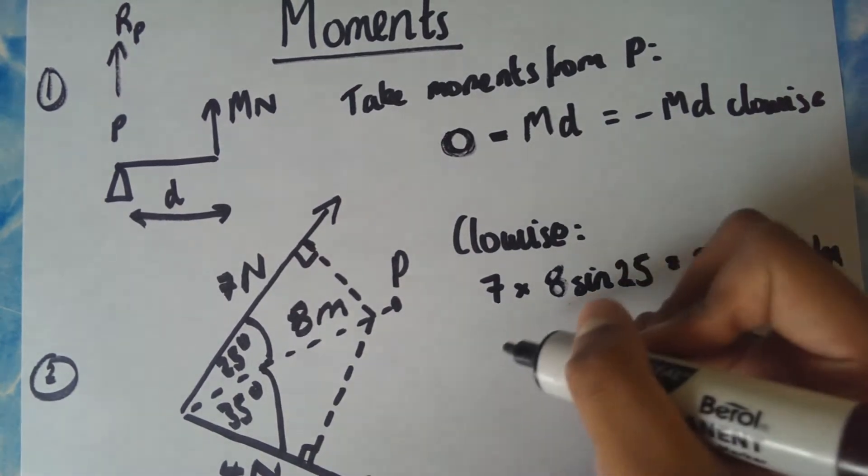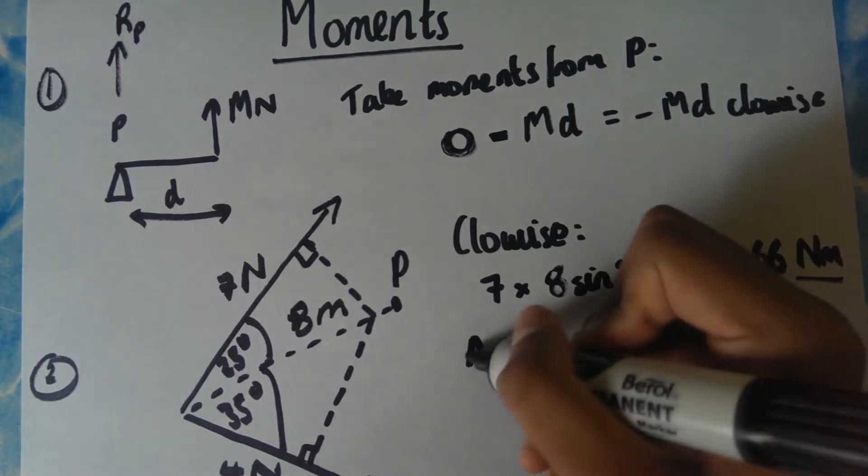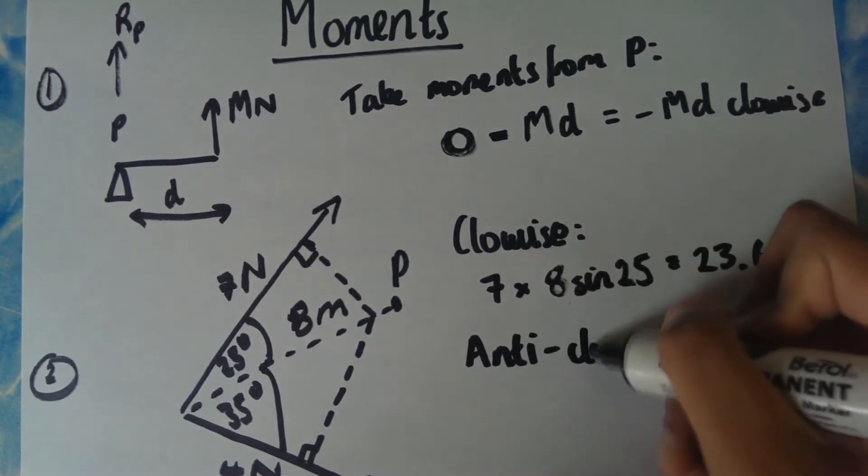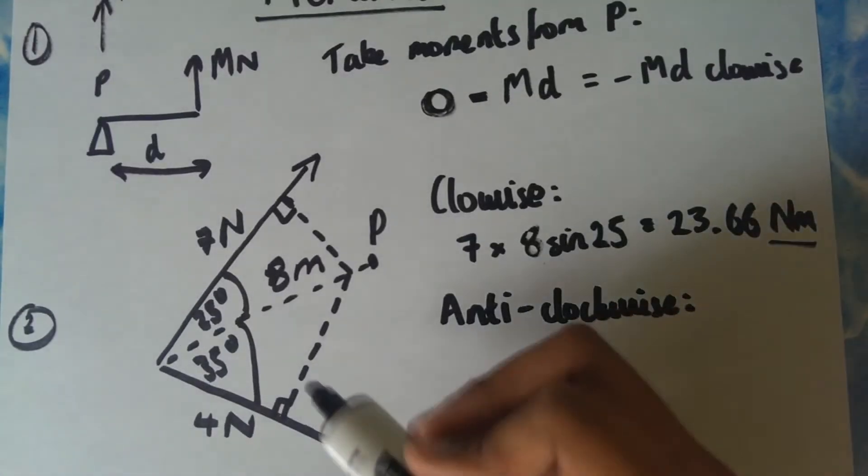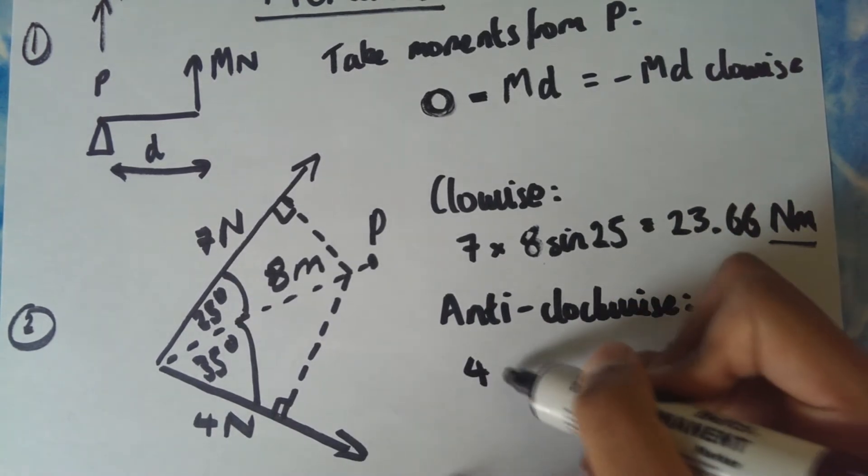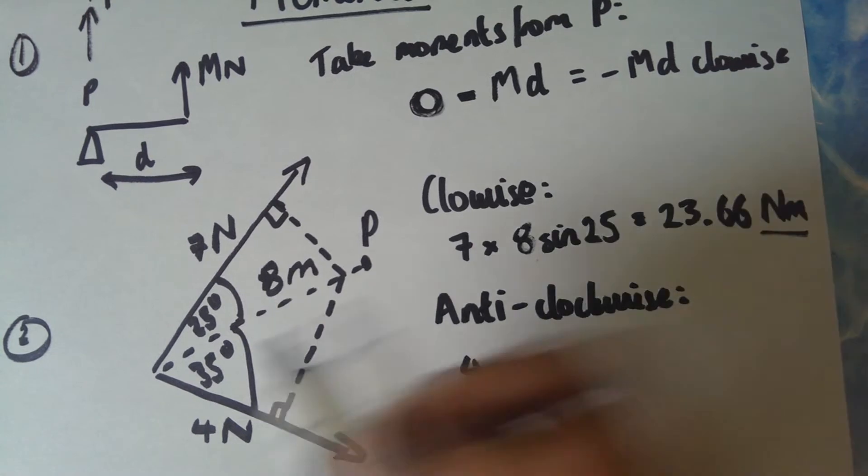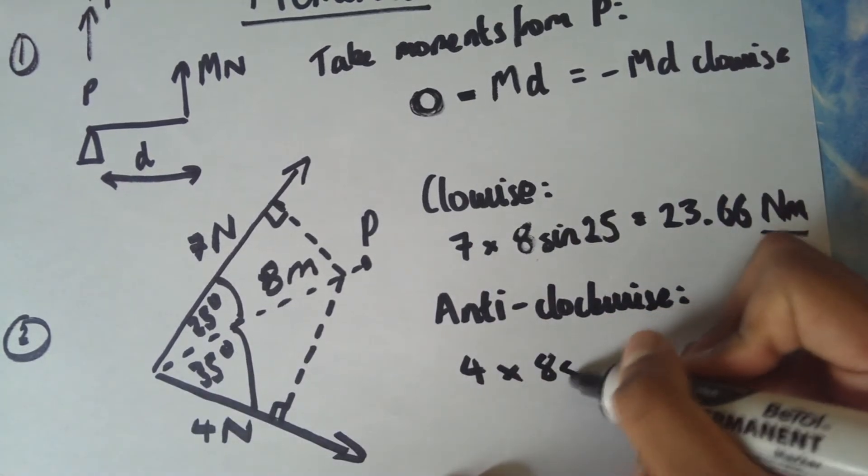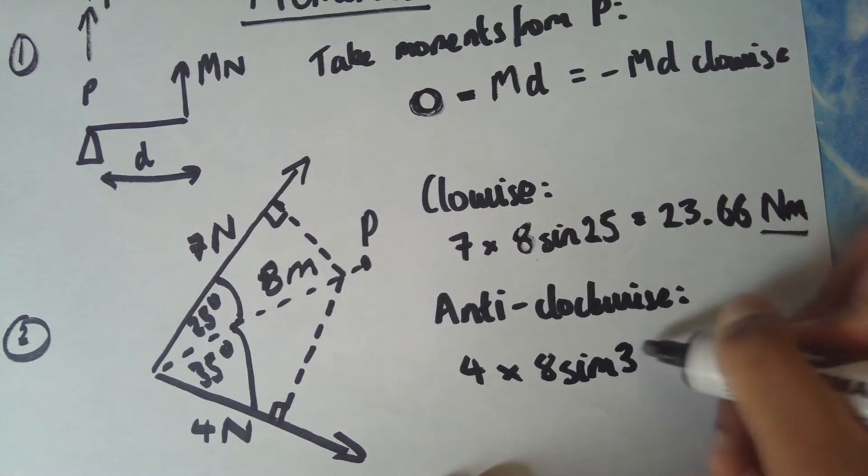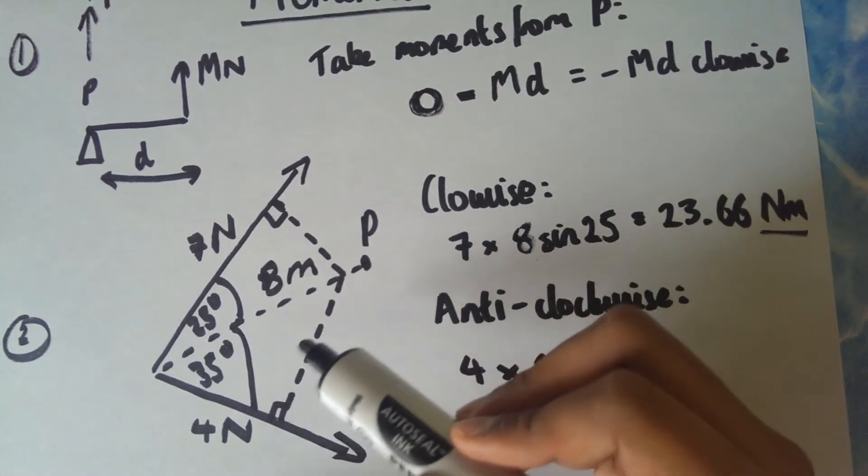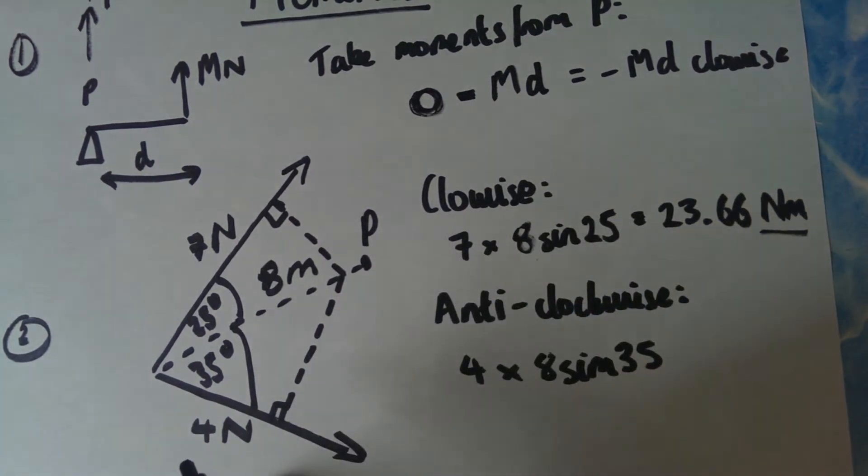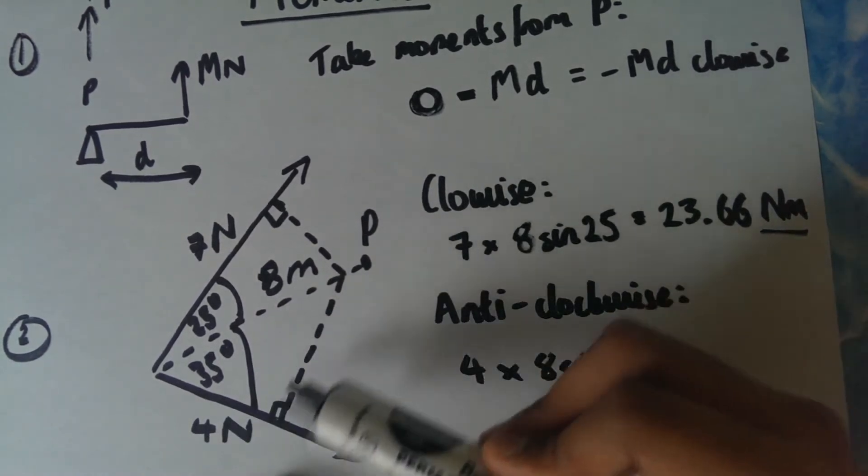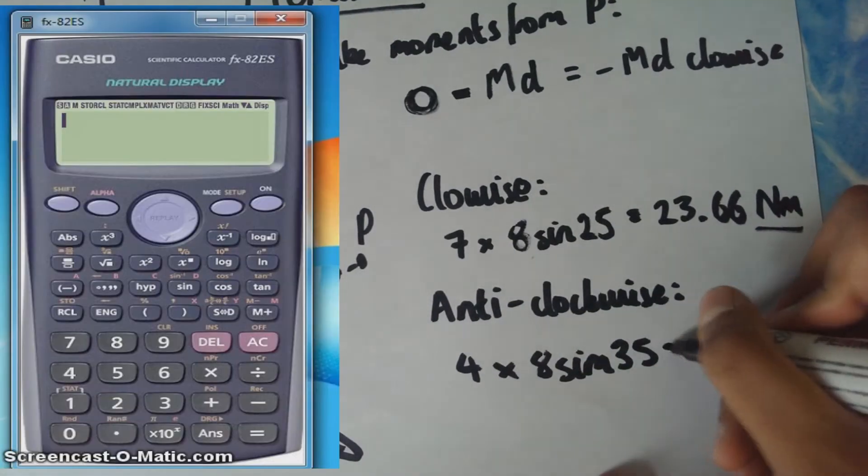And then considering anticlockwise, you're gonna get four, because that's the force, times eight again because that's the same distance, and it's going to be sine 35 this time because we want to get this perpendicular distance here. That's eight sine 35 because that's eight and that's 35, and so you want to work out this distance here. So obviously that's just using trigonometry and that will give you 18.35 Newton meters anticlockwise.